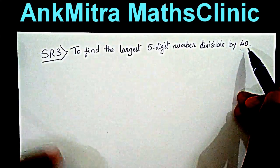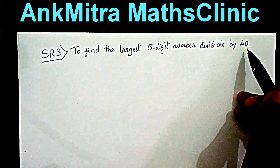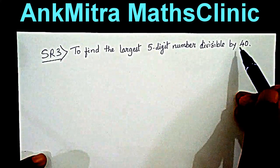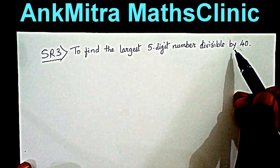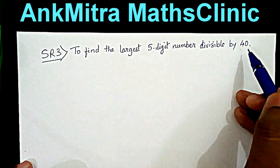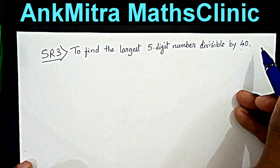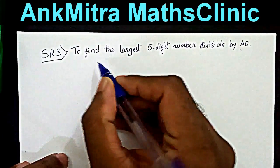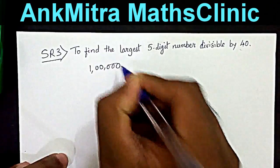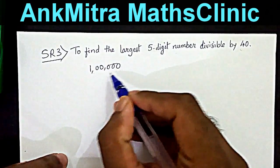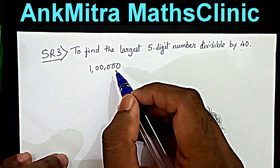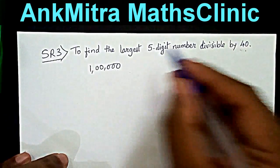Since 1000 is divisible by 40, all multiples of 1000 will also be divisible by 40. So 10,000 will also be divisible by 40, and 1 lakh will also be divisible by 40 since it's a multiple of 1000. So 1 lakh — 1,00,000 — is the smallest six-digit number and it is divisible by 40.